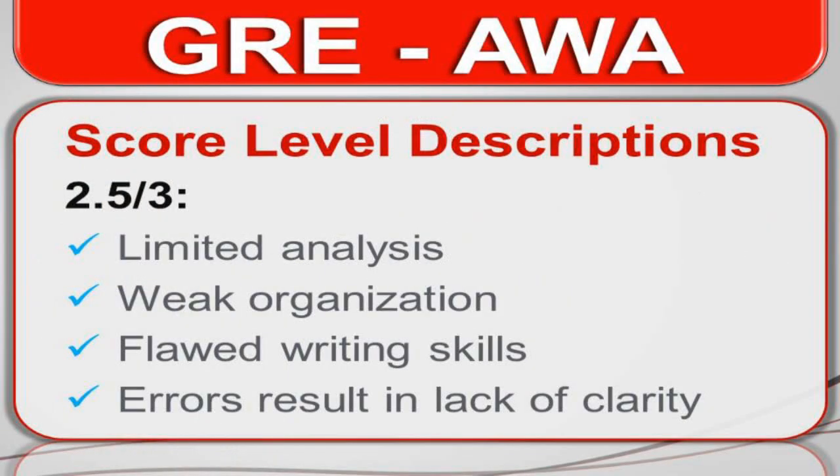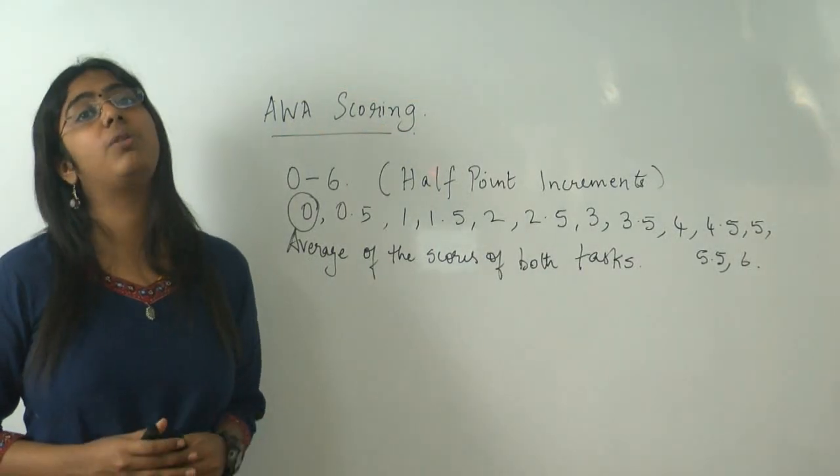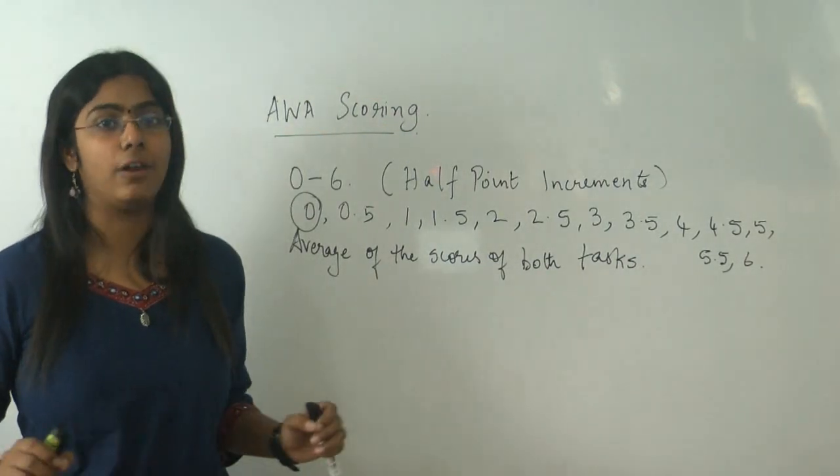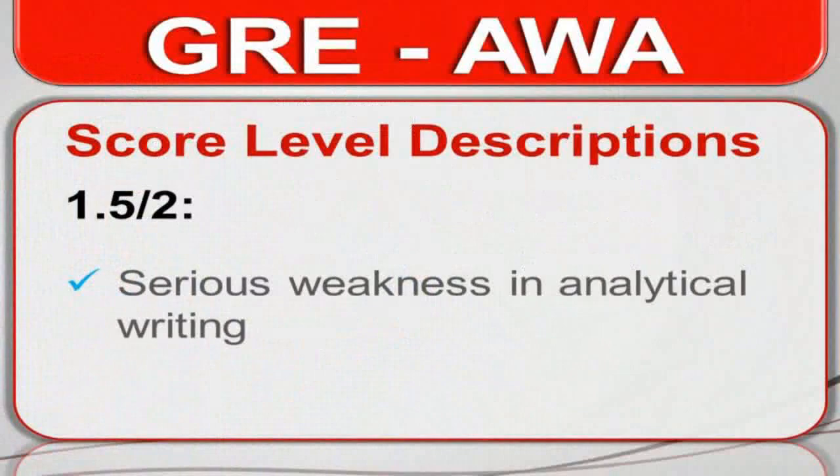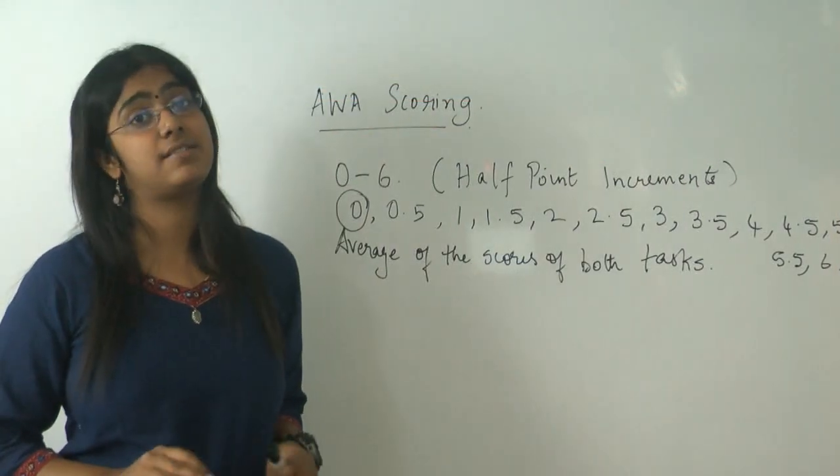So 2.5 and 3. It means that your analysis is limited. Your organization is very weak. Your writing skills are flawed. And your errors, your linguistic errors result in a general lack of clarity. The professor does not get what you are trying to say at all. Next, we come to 1.5 or 2. You have serious weaknesses in analytical writing. Meaning your writing is just not good.